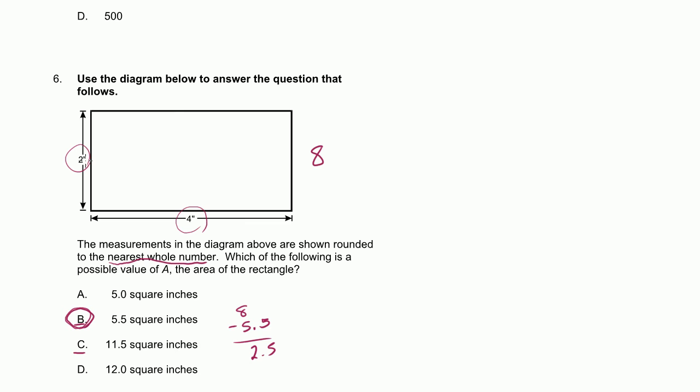But just to verify that this definitely could be an answer, if these are rounded to the nearest whole number, then this one could be as low as 1.5 inches, right? If this dimension is actually 1.5 inches, when they rounded it, they would have made it 2. It couldn't have been 1.49, because then they rounded it down. Similarly, this could have been as low as 3.5. When they rounded, they would have rounded it to 4. It couldn't have been 3.49, because then they would have rounded it down to 3. So if this dimension was 3.5 and this dimension is 1.5, what would the area have been?